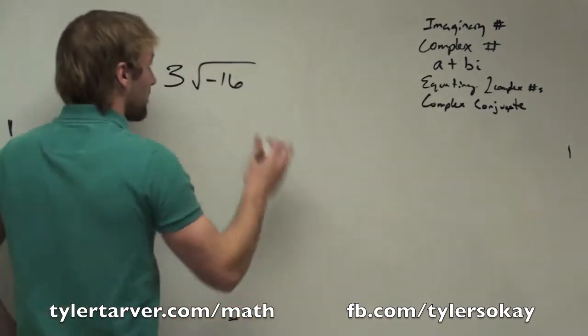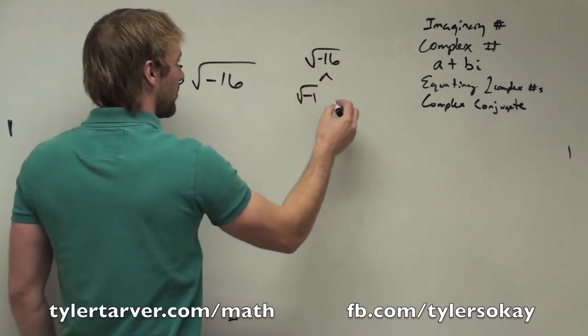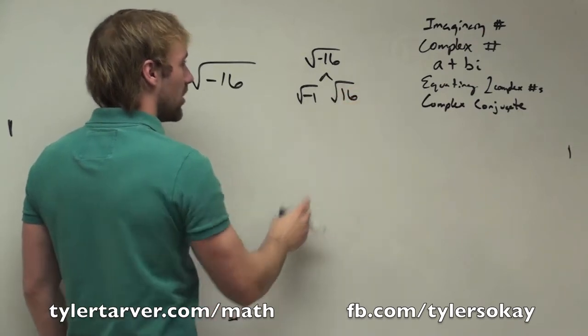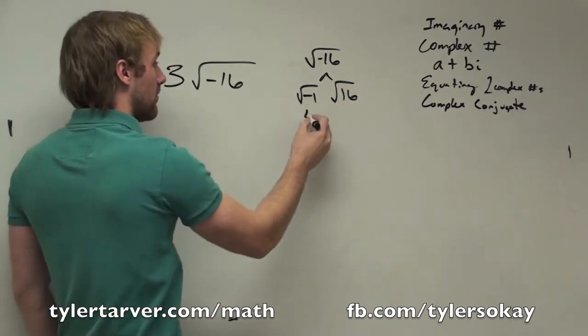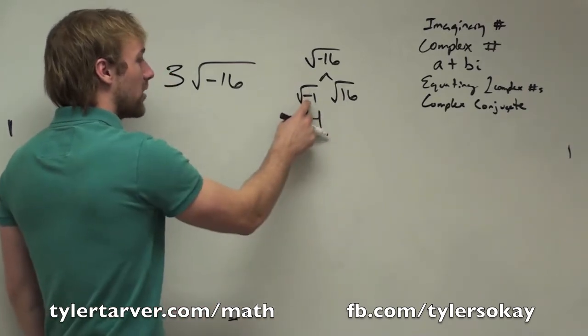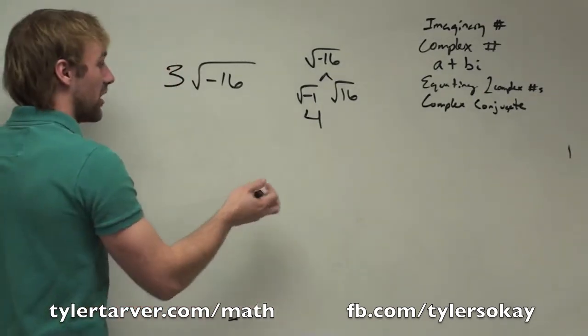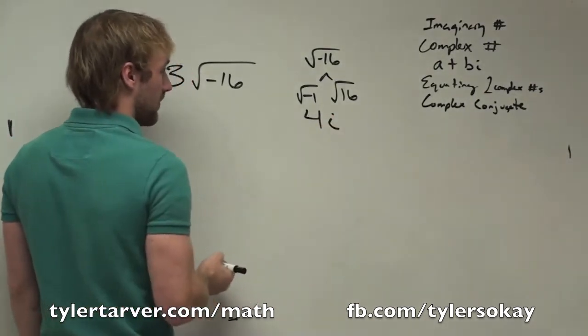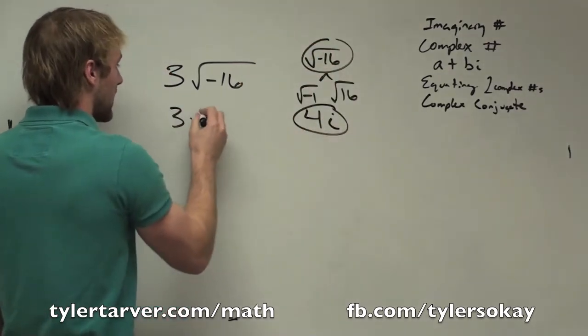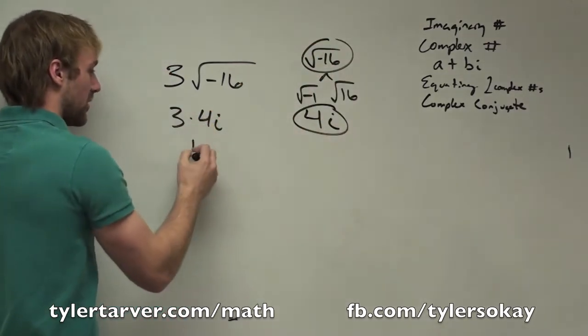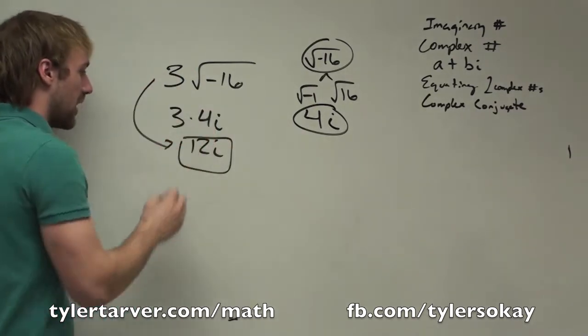On this one, what would you do? We would split negative 16 up to radical negative 1 and radical 16. Radical 16 is easy. What is that? 4. Radical negative 1, there's no possible answer for that. So what we do is we put an i. Now I'm going to replace that right there with 4i. So 3 times 4i. 3 times 4 is 12. So your answer would be 12i.